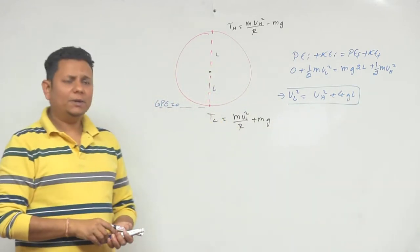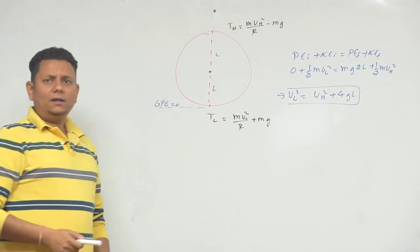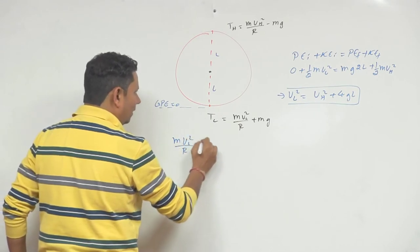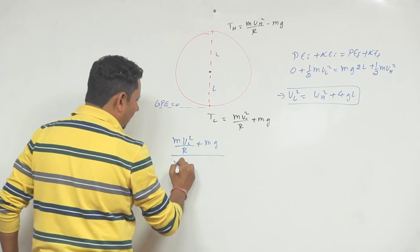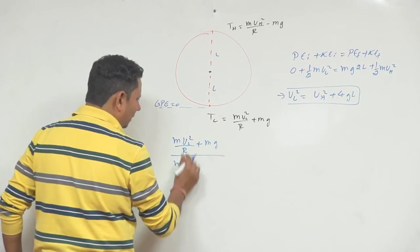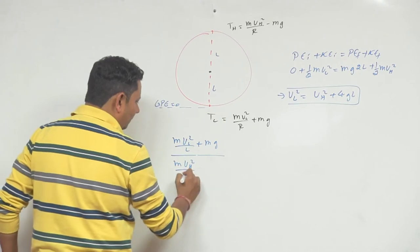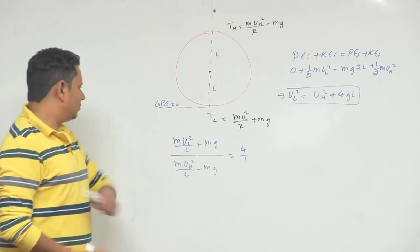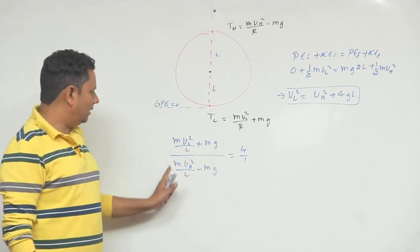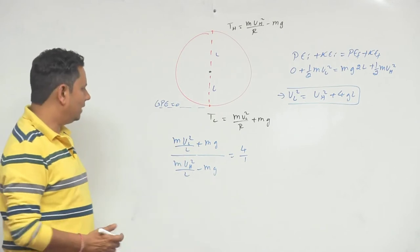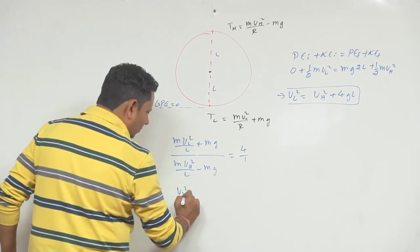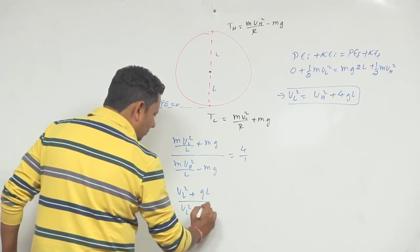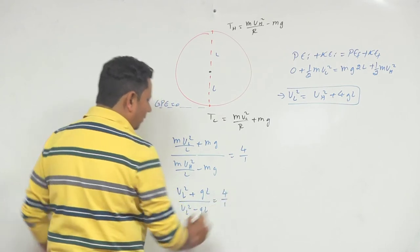Tension ratio 4:1 का equation लिखते हैं: [mv²_L/L + mg] / [mv²_H/L − mg] = 4/1। ऊपर वाली equation को L से multiply करने पर: [V²_L + gL] / [V²_H − gL] = 4/1।